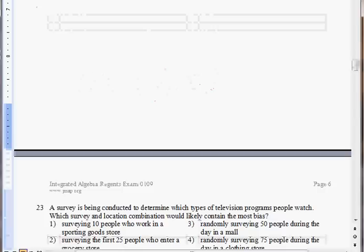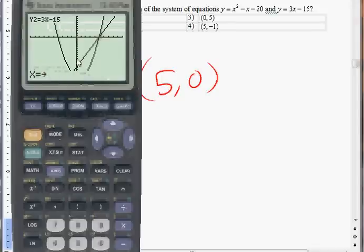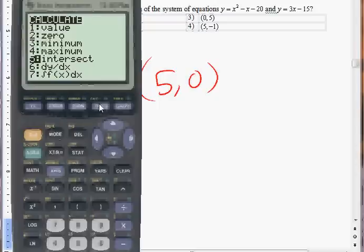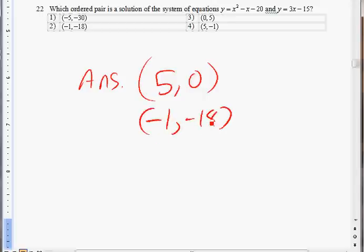Another answer is, if you go back to the calculator over here, you can go second, calc again. And go down to intersect. And you're going to move the cursor all the way to the left side where the left intersection is between the line and the parabola. Press enter three times. And it's telling you x equals negative one, y equals negative eighteen. And that is the other solution. So there's two solutions to this question. Negative one and negative eighteen. And also five, zero. So take a look at the different choices here and see which one has it. We do have choice two. Negative one, negative eighteen. And that is the answer.